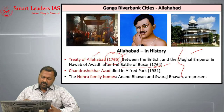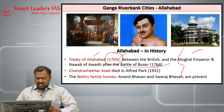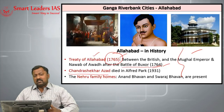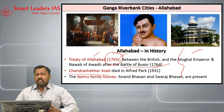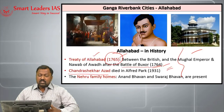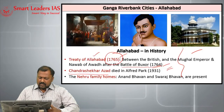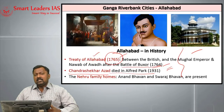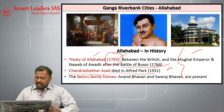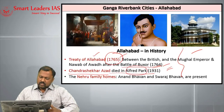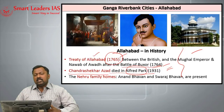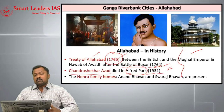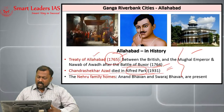Allahabad is also associated with Chandrashekhar Azad, a prominent revolutionary of the 1920s–30s phase. Azad was betrayed by a friend and surrounded by the British in Alfred Park in Allahabad. Unable to escape, he shot himself dead, committing suicide in 1931. Today the park is named after him as Azad Park.